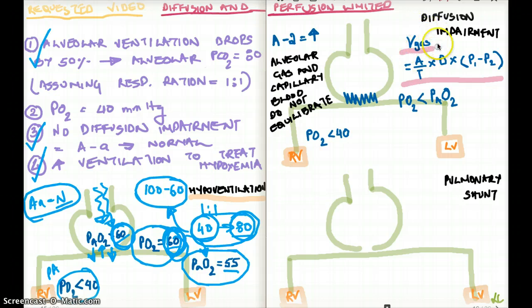It says that the diffusion of a gas depends on certain variables. For example, surface area divided by thickness of the alveolus. Then there is a diffusion constant times P1 minus P2. P1 minus P2 is the difference in partial pressure between the alveolus and the arterial.